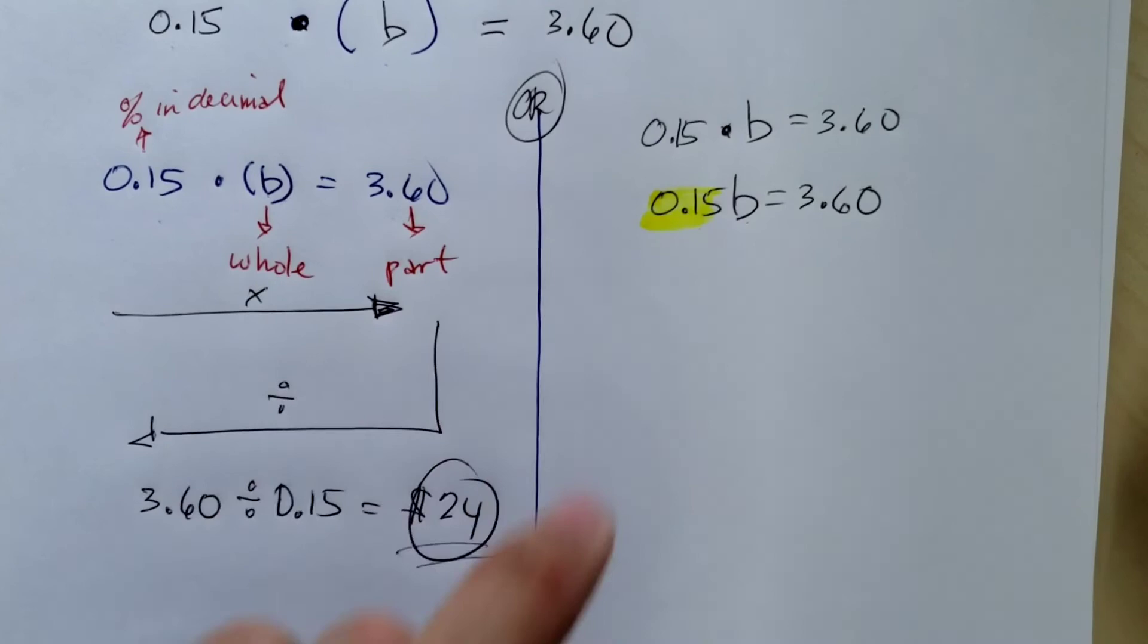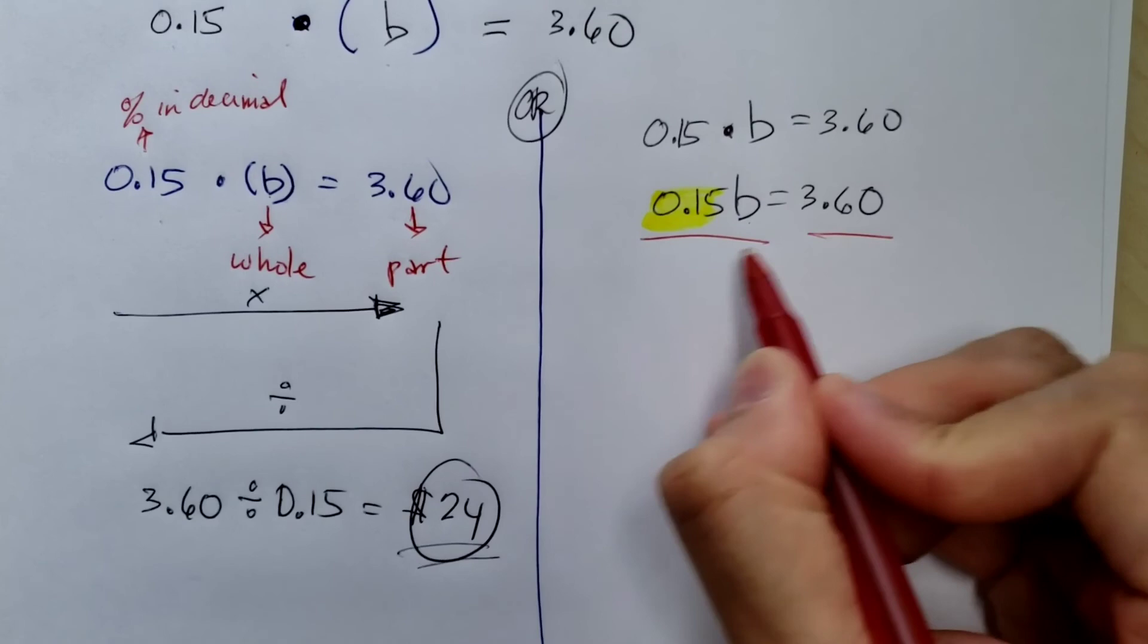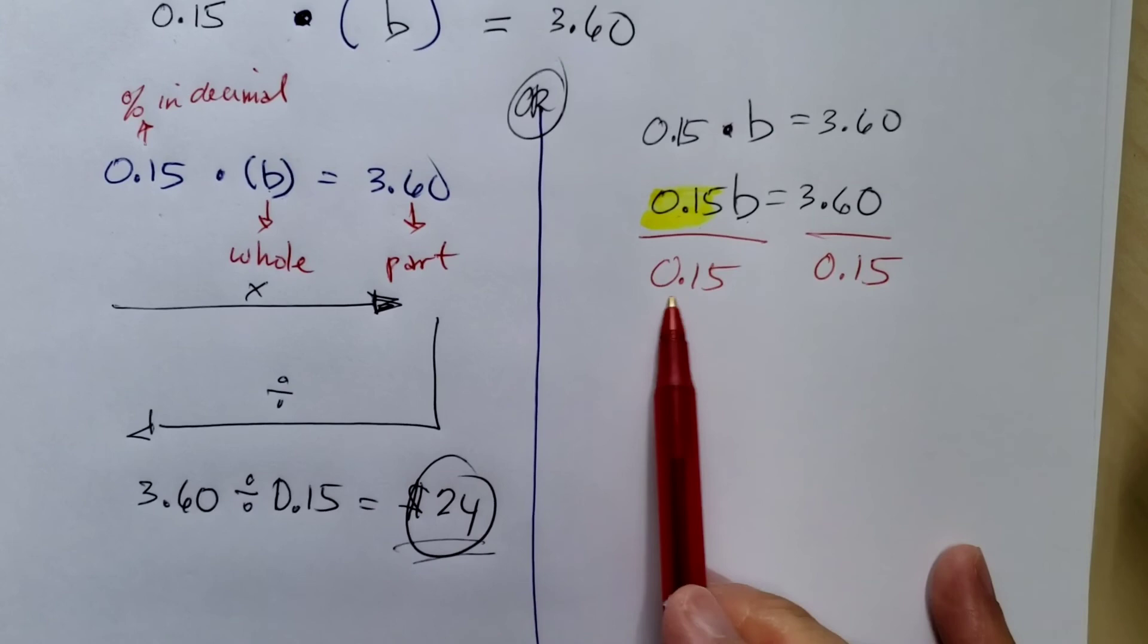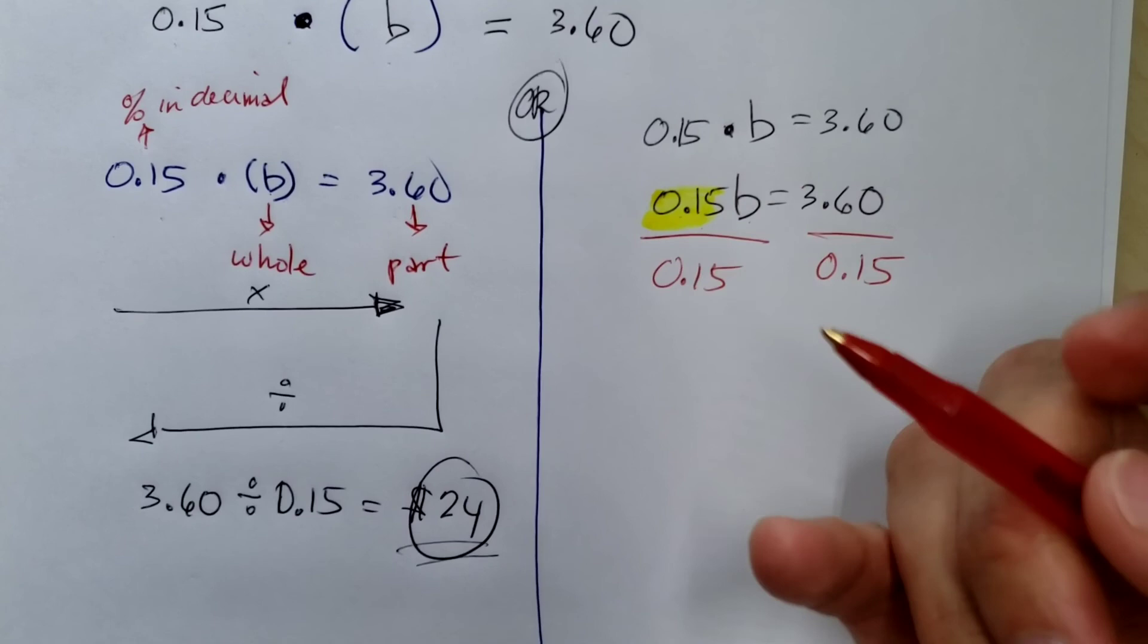Since it's being multiplied, what do we do? We need to do this inverse operation. Undo multiplication by dividing by its coefficient, 0.15. So we need to do both sides because of the property of equality of division.